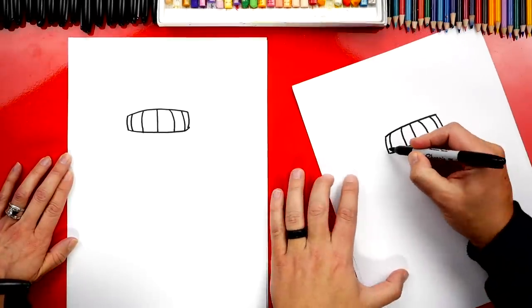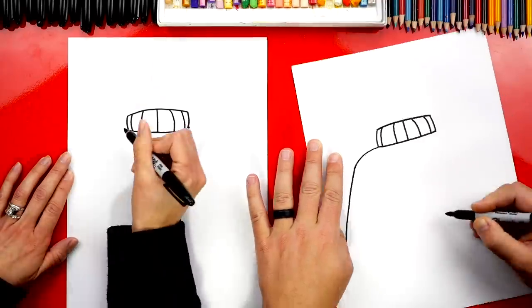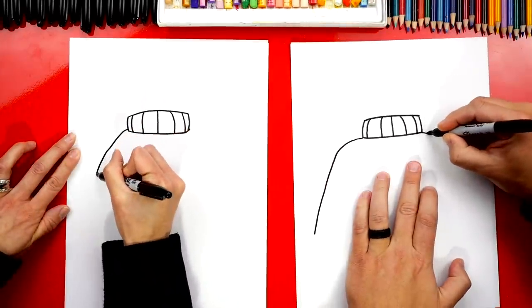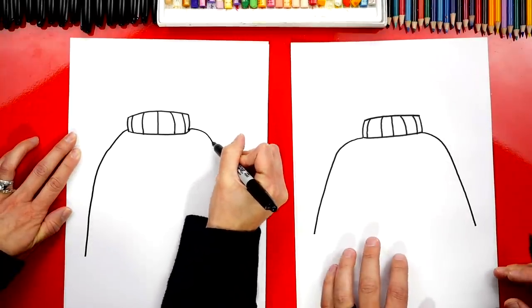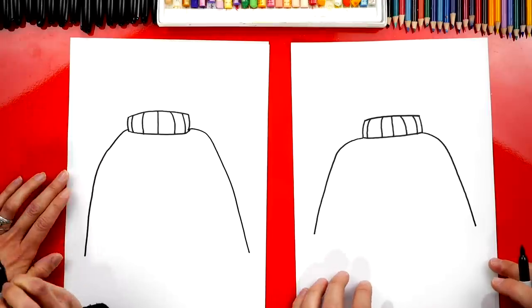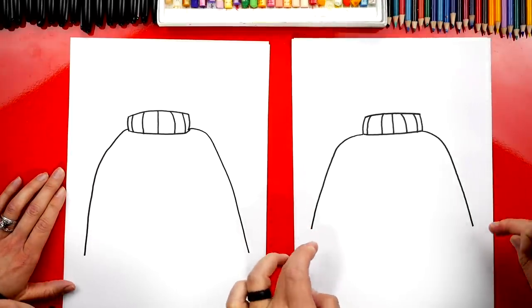Now we're gonna draw the shoulders and also the sleeves. So we'll draw a curve that comes out for the shoulder and then come down for the sleeve. And we'll repeat that same step on the other side. Come down for the other sleeve. I like how big your sweater is gonna be. It's gonna be so big and fluffy.